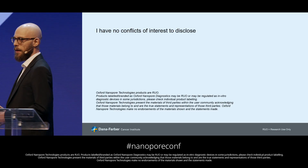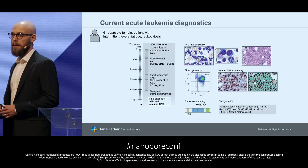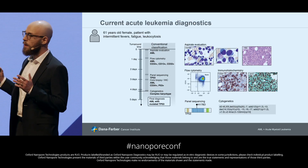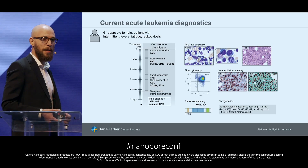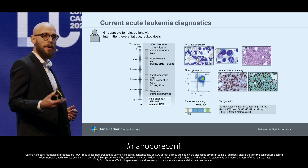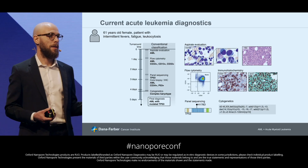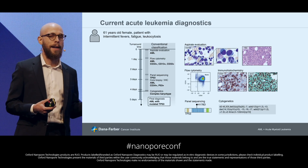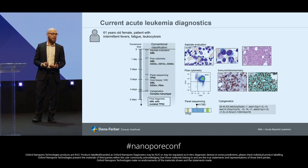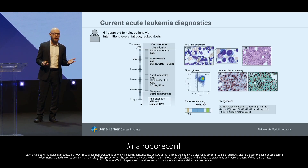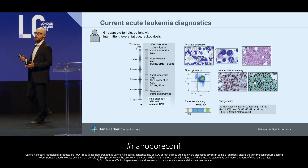Let me start with an introduction about the current status of acute leukemia diagnostics. I will use a real example from Dana-Farber. This is a 61-year-old patient having fever, fatigue, and leukocytosis. With these symptoms, the doctors suspect a case of acute leukemia that requires urgent treatment. But which leukemia? Because there are several subtypes with distinct prognosis and treatment responses.